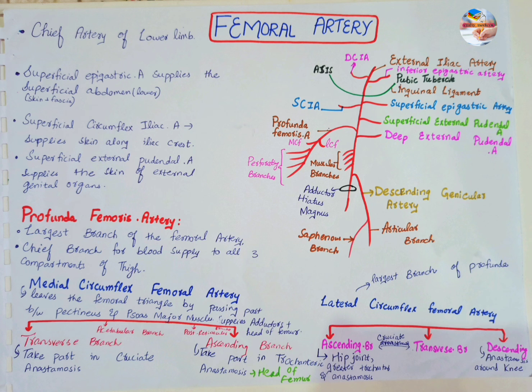The last branch of the femoral artery is the descending genicular branch, which runs in the vastus medialis and then divides into the articular and saphenous branches, both of which take part in the anastomosis around the knee joint. This concludes the overview of the femoral artery.